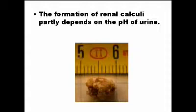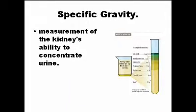The formation of renal calculi, or renal stones, depends in part on the acidity of the urine. Specific gravity — also called density — measures the capacity of the kidney to concentrate the urine. When the kidneys are not working, the density of the urine equals exactly the density of water, which is 1.000.